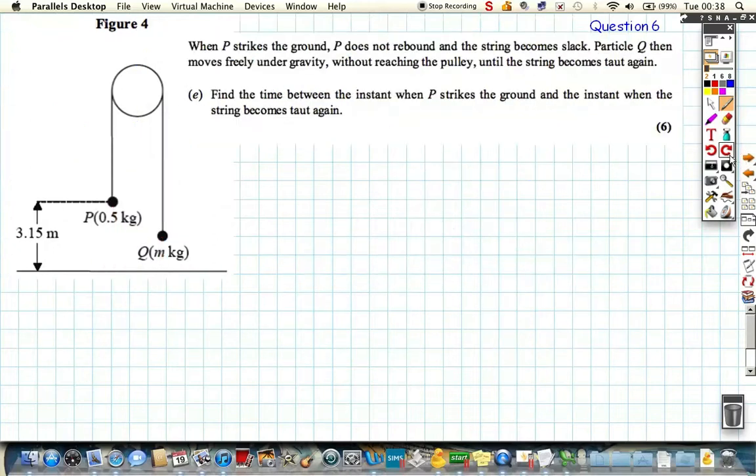Just one last final point. It's a six mark question. When P strikes the ground, it doesn't rebound and the string becomes slack. Particle Q then moves freely under gravity without reaching the pulley until the string becomes taut again. Let's forget this part of the diagram and imagine that P has come down and it has hit the ground here. At that point, we want to find out the final velocity at which P hits the ground because that's going to be the initial velocity when Q is completely free and the string becomes useless.